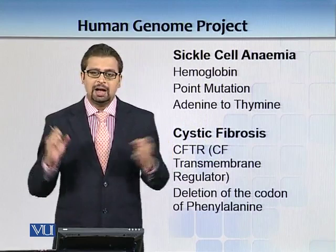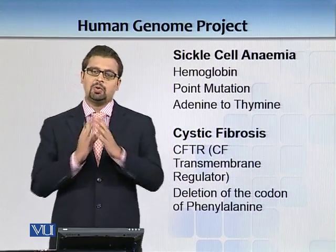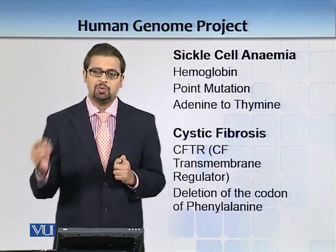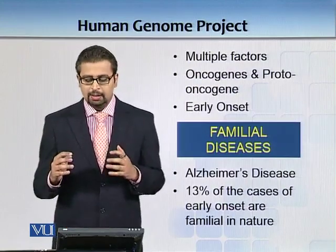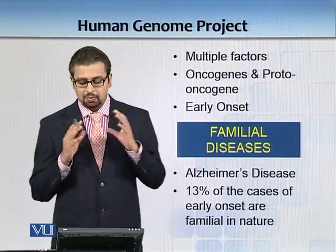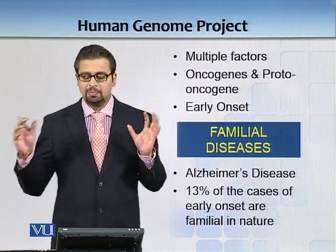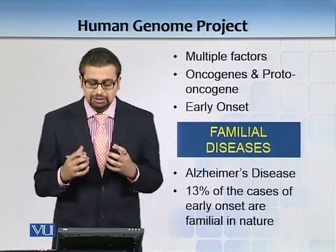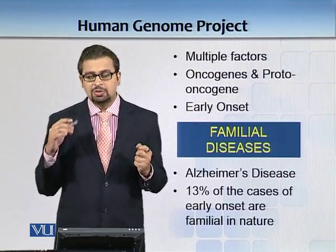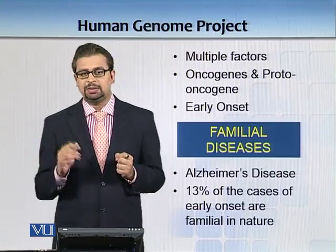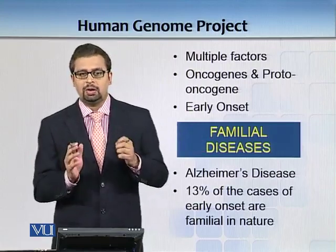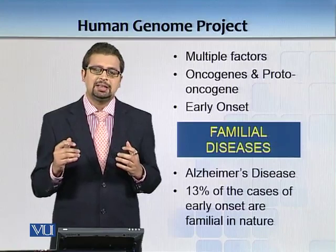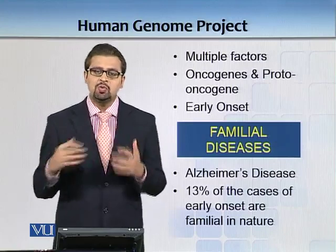With the Human Genome Project the idea was that we could have the whole genome — the whole map of your body — and identify what genes produce what. But in certain cases things are not as straightforward. There are multiple factors; for example, with regards to cancer, oncogenes and proto-oncogenes make it not as black and white as sickle cell anemia or other single nucleotide polymorphic disorders.